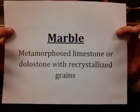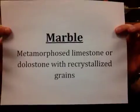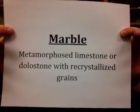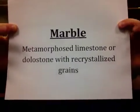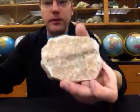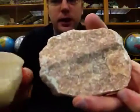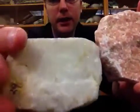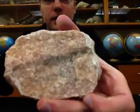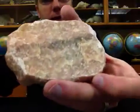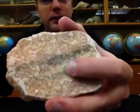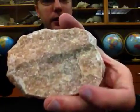The next non-foliated metamorphic rock is marble. When we look at marble, we're looking at metamorphosed limestone or dolostone — sedimentary protoliths — that again have recrystallized grains from their origins. When we look at marble, we can see crystals shining and bouncing light back to us. These started in the protoliths as different grains that, because of the heat and pressure, have recrystallized to become interlocking. It feels relatively smooth.